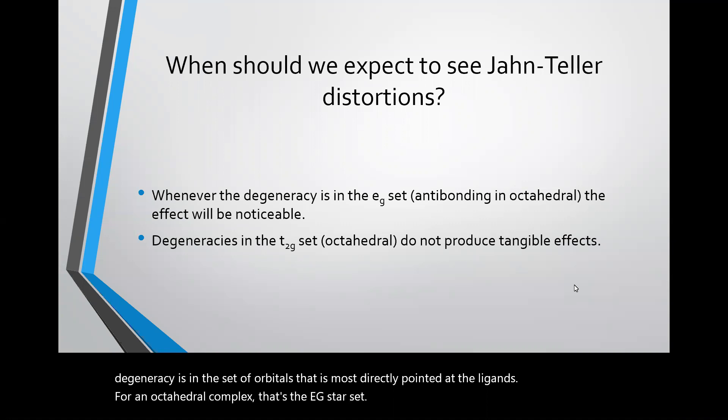If we have a degeneracy in the t₂g set of an octahedral complex, that does not produce tangible effects. So although we might predict that a d1 octahedral complex would be Jahn-Teller distorted, because the degeneracy is not in orbitals that are pointed at the ligands, not much happens.